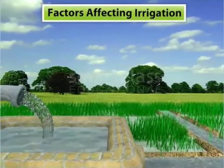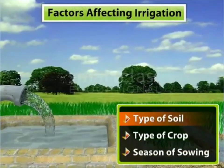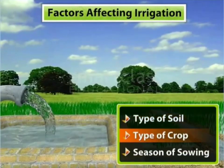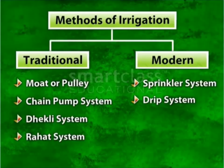Now, let us see the various factors affecting irrigation. Type of soil, type of crop, and the season of sowing are the three factors affecting irrigation.